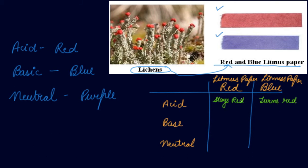When you dip a red litmus paper into a basic solution — for example, a solution of potassium hydroxide — the red litmus paper will turn blue, and the blue litmus paper will stay blue, which shows that it is a basic solution.